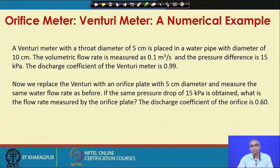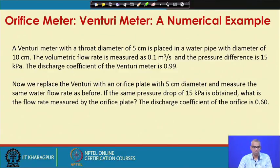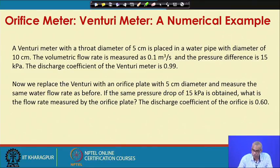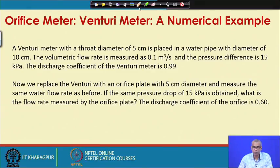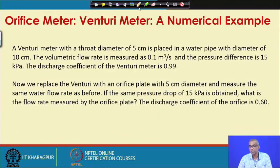Let us take a numerical example involving measurement of flow with orifice meter and venturi meter. A venturi meter with a throat diameter of 5 cm is placed in a water pipe with diameter 10 cm. The volumetric flow rate is measured as 0.1 m³/s and the pressure difference is 15 kPa. The discharge coefficient of the venturi meter is 0.99. We then replace the venturi with an orifice plate with 5 cm diameter and measure the same water flow rate. If the same pressure drop of 15 kPa is obtained, what is the flow rate measured by the orifice plate? The discharge coefficient of the orifice plate is given as 0.60.